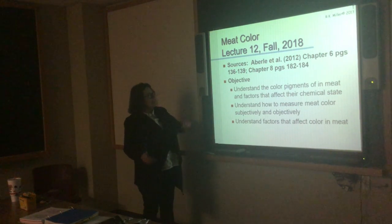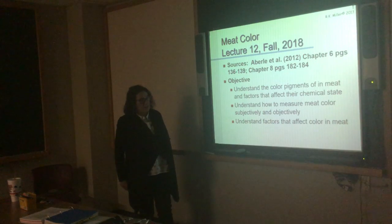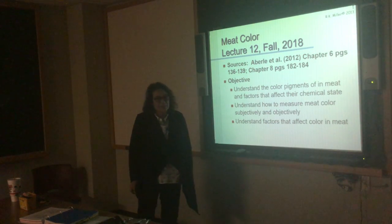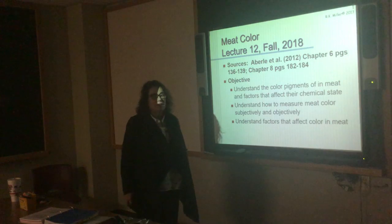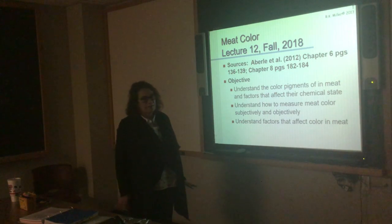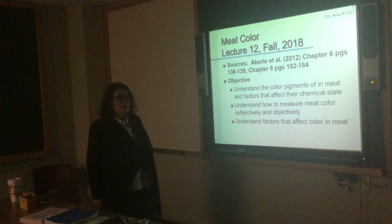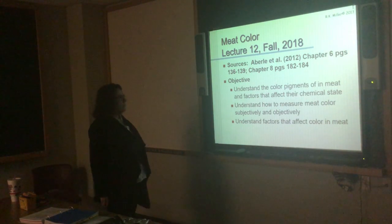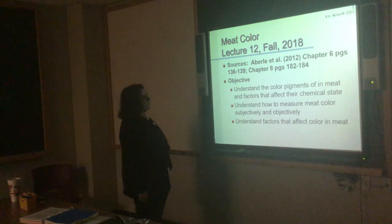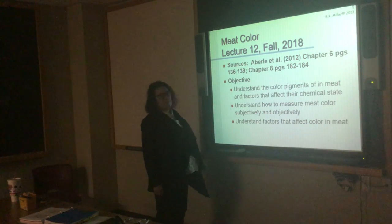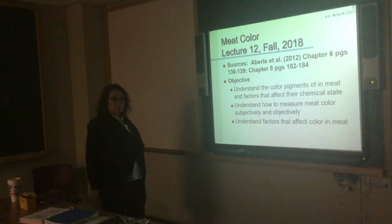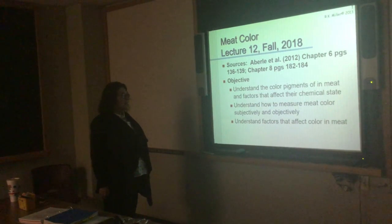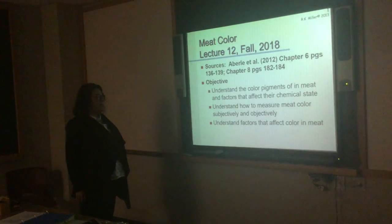Color — I've given you the color guidelines that are in the folder on eCampus. Those are the current color guidelines; they're about ready to come out a little bit differently, but they have a lot of information there. The objective of this lecture is to understand color pigments of meat and factors that affect their chemical state, and also to understand how to measure color subjectively and objectively.